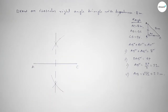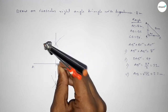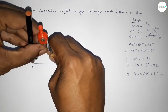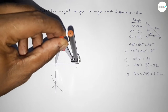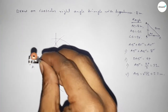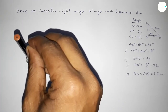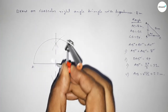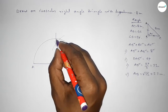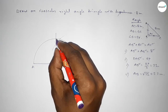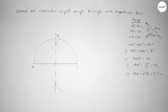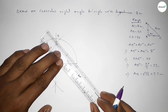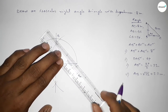Next, putting the compass at the midpoint O and taking the length OA and OC to draw a semicircle. The bisector and the semicircle meet at point B. Now joining C and B.